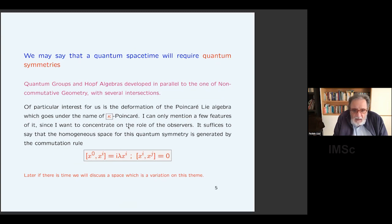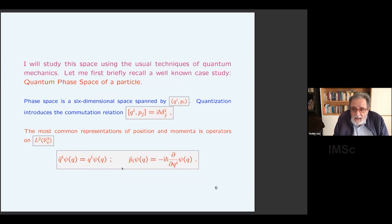One way is to have Kappa Minkowski. Kappa Minkowski comes as the homogeneous space of Kappa Poincaré, which is a deformation of the Poincaré group, which actually was done before Kappa Minkowski. And Kappa Minkowski is described by this non-commutativity. This is the timelike Kappa Minkowski, the one that also Bijvet was describing.